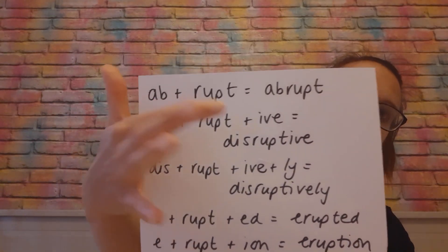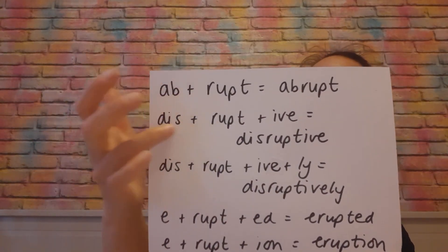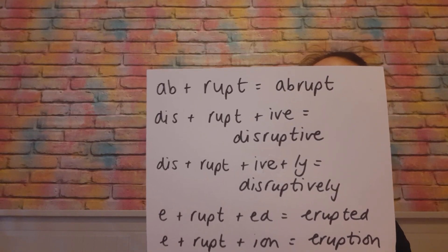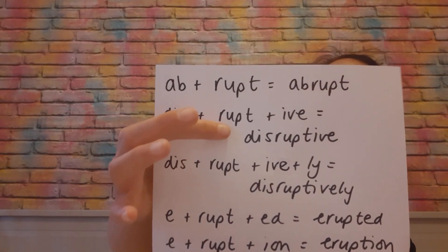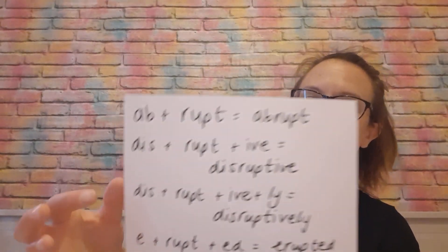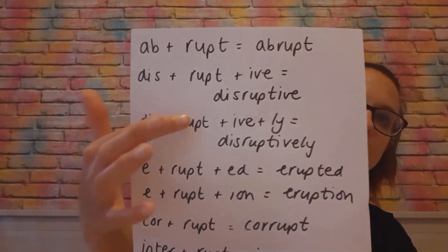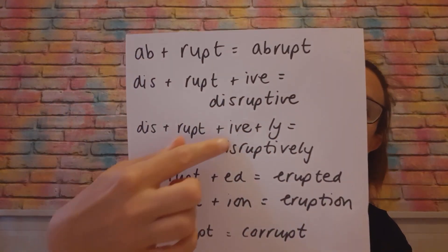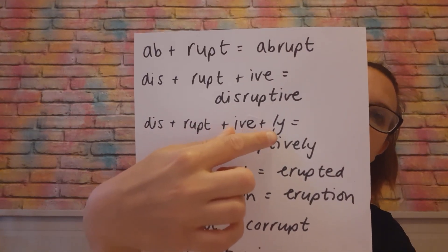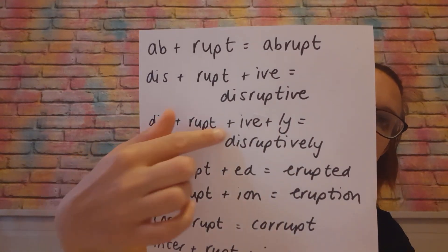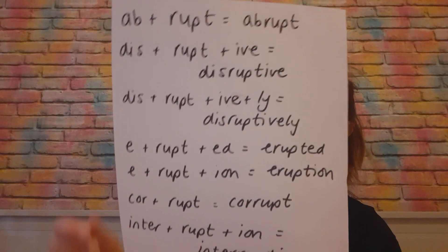We've got 'disruptive.' So 'dis' again means kind of 'off.' Disruptive — being a disruptive influence — really means breaking away from the norm. And then we've also got 'disruptively.' We keep the 'e' here because we haven't got a suffix starting with a vowel. So 'disruptively' — for example, 'they went down the corridor very disruptively' — meaning not conforming to how they should be.